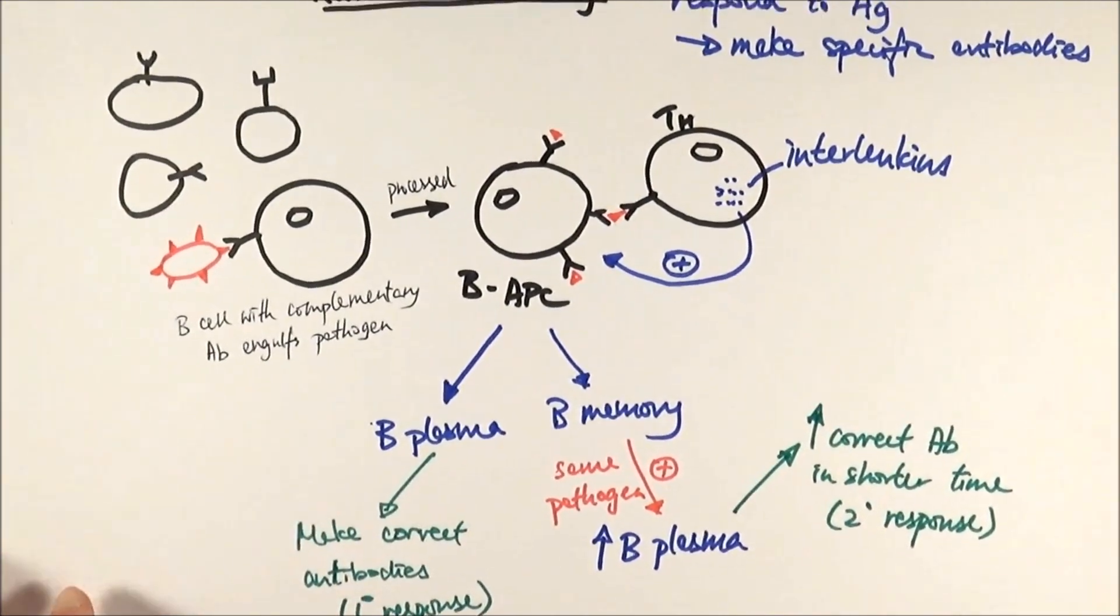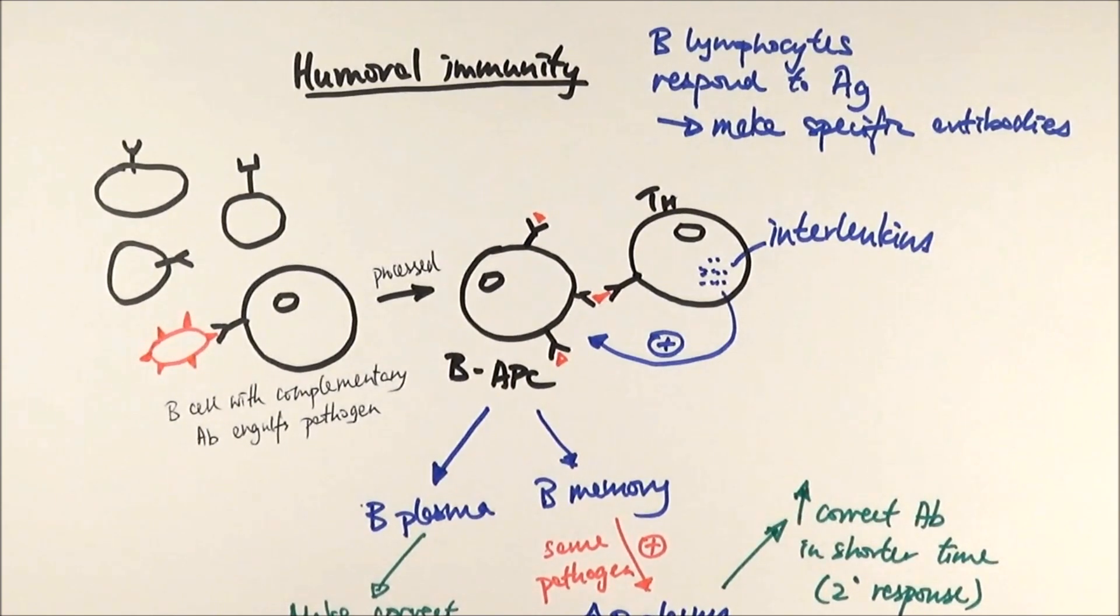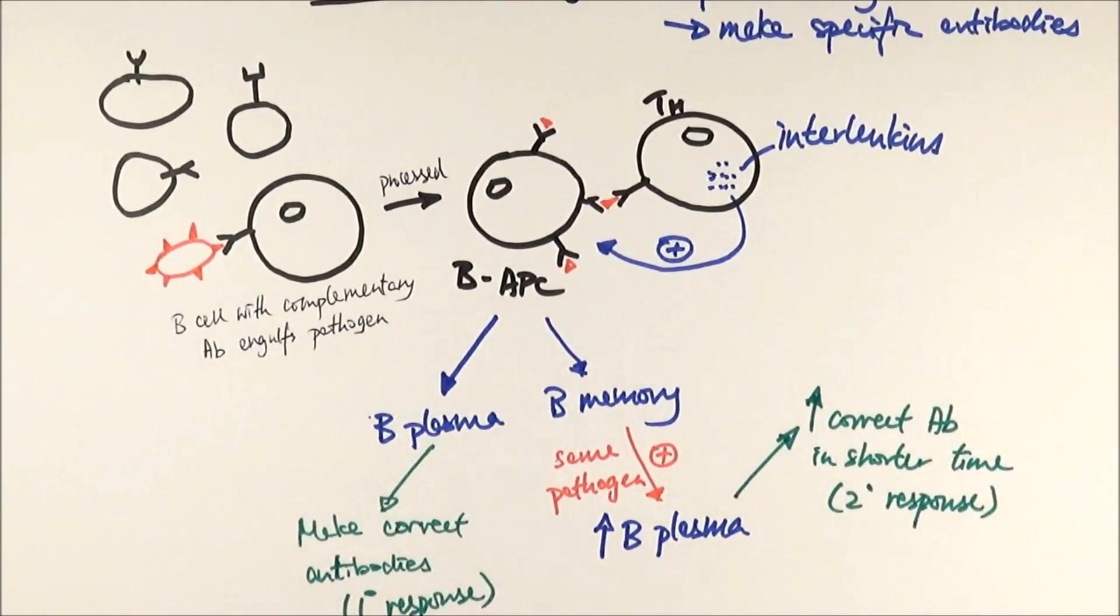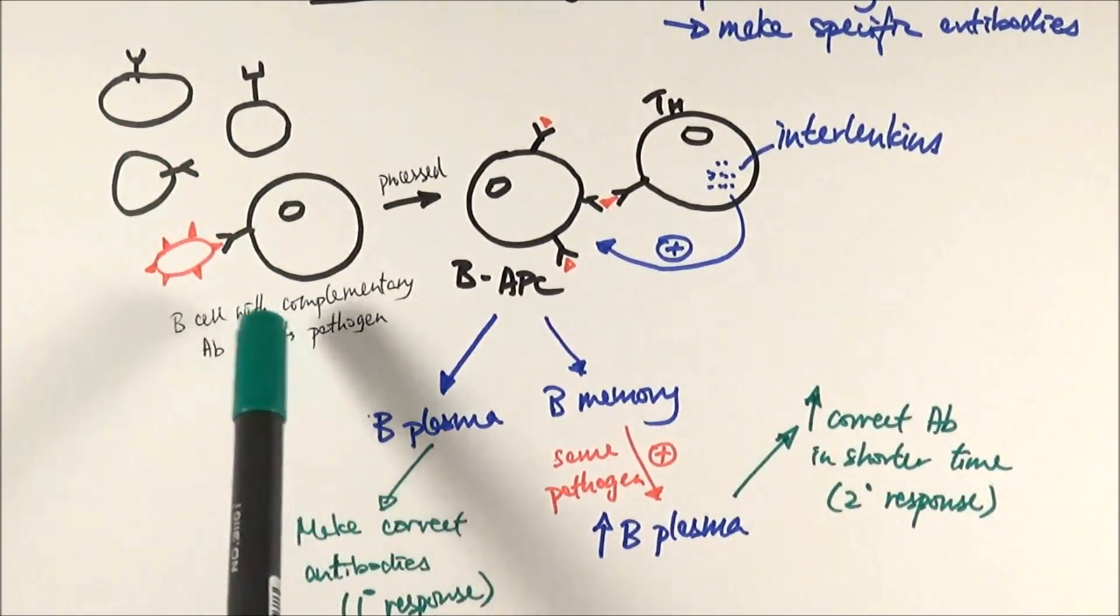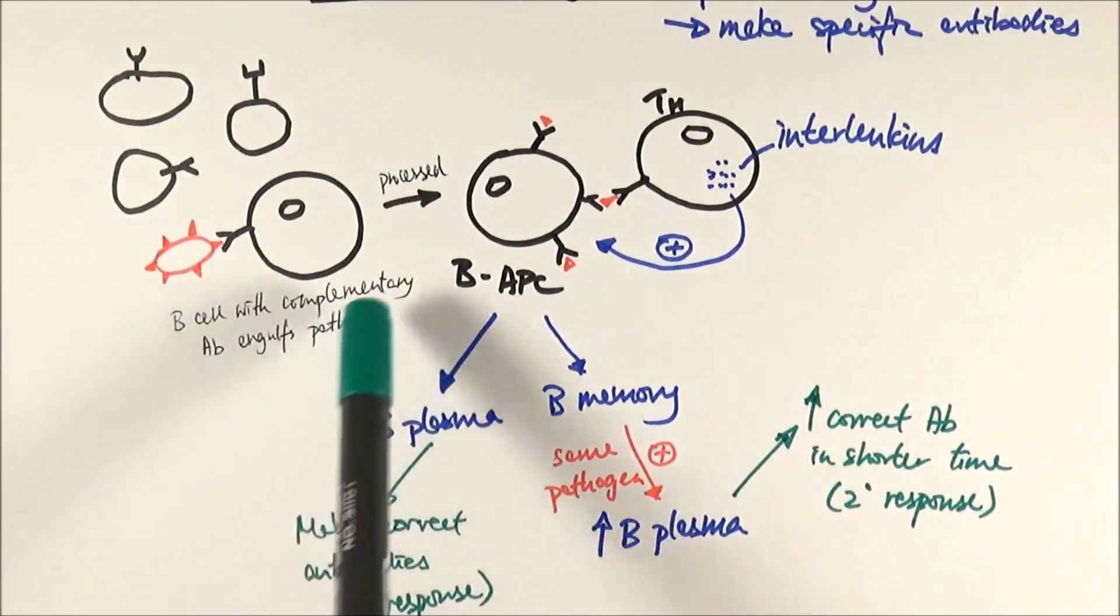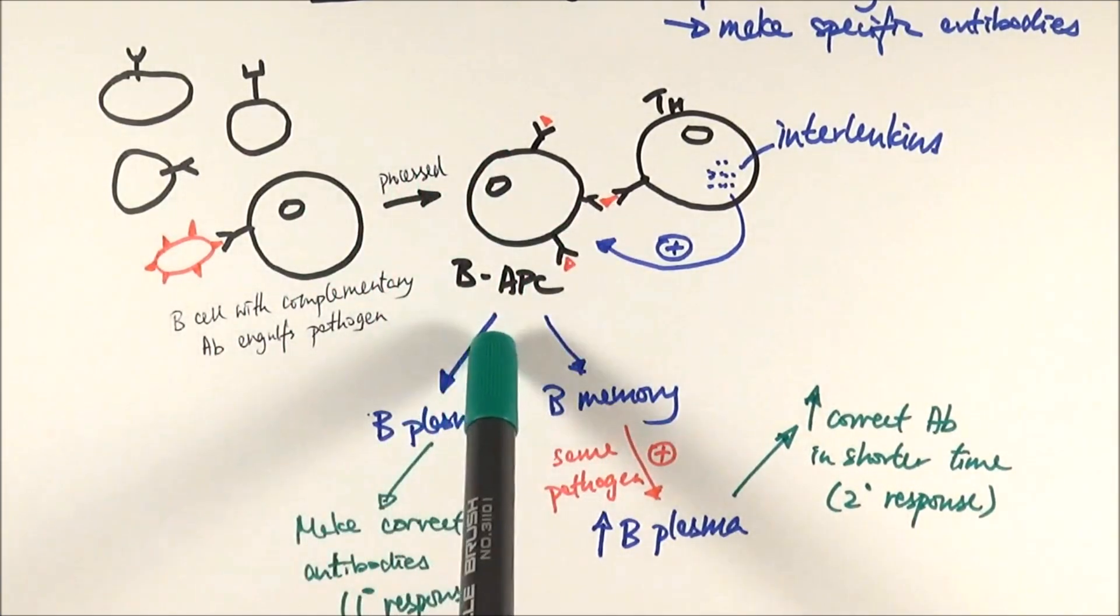So there you have it. Humoral immunity where B lymphocytes respond to antigens either on altered cells or just free floating pathogens. We get different types of B cells in the beginning with different types of antibody on the cell surface. But the one with the complementary antibody will bind to the antigen and engulf it like a macrophage and becomes a B antigen presenting cell.